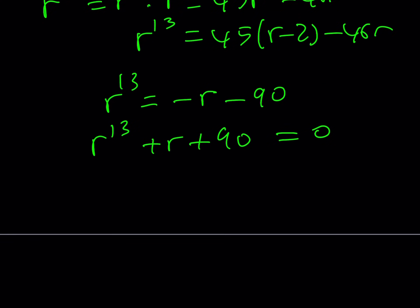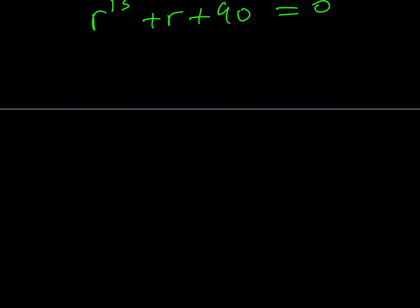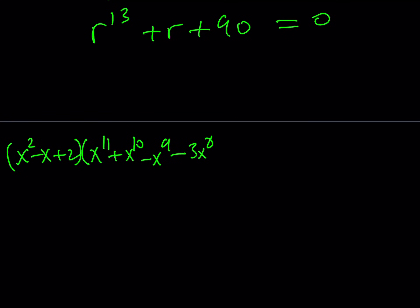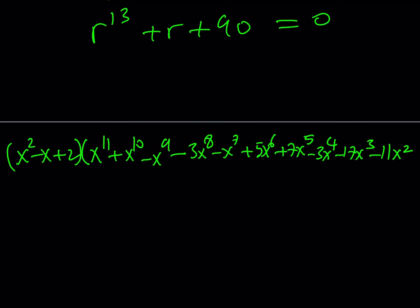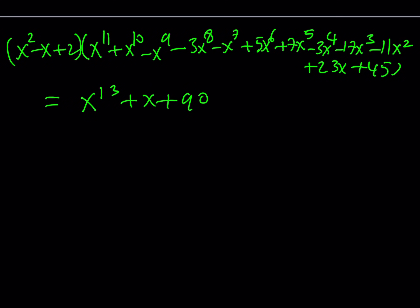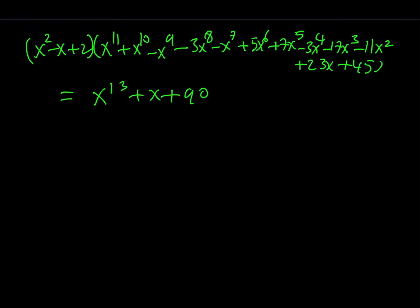As I mentioned, I'll share a link showing a very long solution to this problem. If you use long division to divide the 13th degree polynomial by x squared minus x plus 2, the quotient is x to the 11 plus x to the 10 minus x to the 9 minus 3x to the 8 minus x to the 7 plus 5x to the 6 plus 7x to the 5 minus 3x to the 4 minus 17x cubed minus 11x squared plus 23x plus 45, and that product gives x to the power 13 plus x plus 90. Thank you for watching — please comment, like, and subscribe. I'll see you tomorrow with another video. Until then, be safe, take care, and bye-bye.